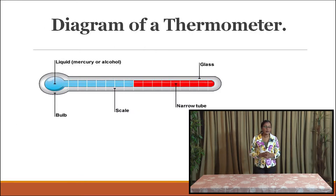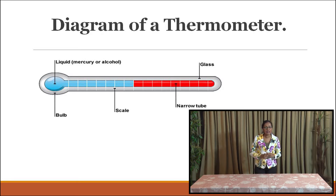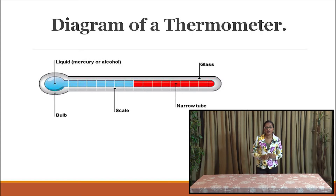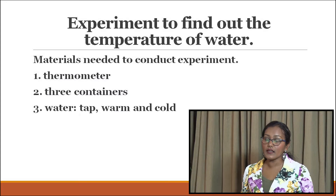You have the bulb, and there is a tube, and on the tube you have scales. Inside this tube you have a glass tube that contains a liquid, and the liquid could either be mercury or alcohol.